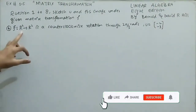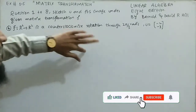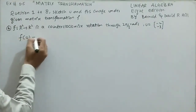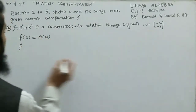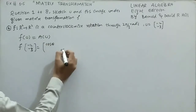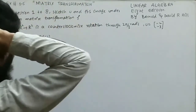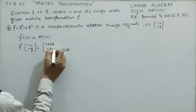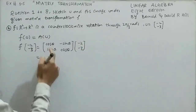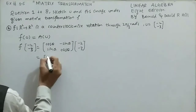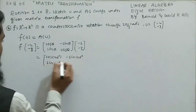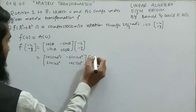Now solving question 4. It tells that a function from R² to R² is a counterclockwise (anticlockwise) rotation through 2π/3 radians, and u = (-2,-3). Using f(u) = A·u, where A is the rotation matrix [[cos θ, -sin θ],[sin θ, cos θ]] with θ = 2π/3 = 120°.